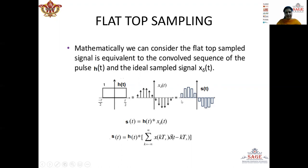Here we can see the amplitude of the carrier pulses varies exactly according to the message signal, but the top of the samples are flat. Now we will consider the mathematical analysis of the flat top sampling technique. Here we have seen that s(t), which is the flat top sample signal, is given as h(t) in convolution with x_delta(t).